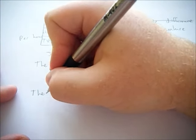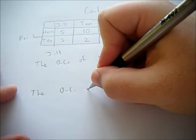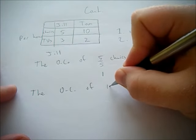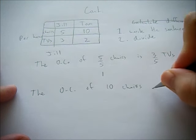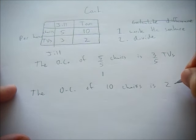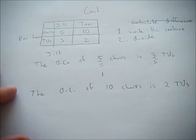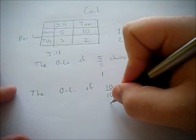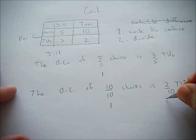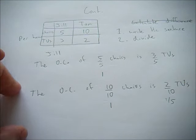For Tom, the opportunity cost of 10 chairs is 2 TVs. Then divide both sides by 10. The opportunity cost of 1 chair is 1 fifth of a TV.